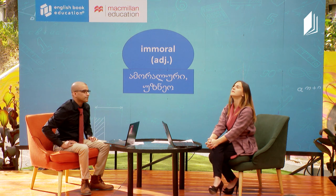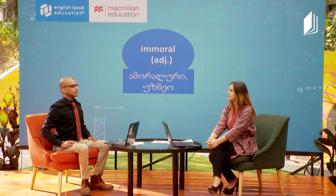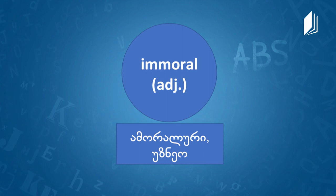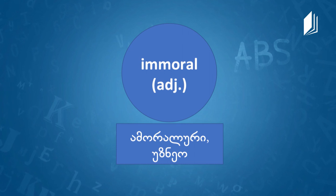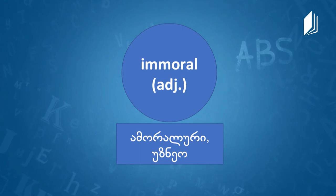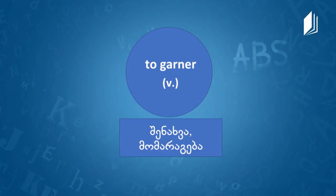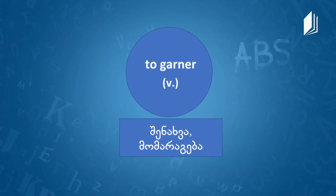Next, we have immoral — an adjective. This is when something is morally wrong; it should not be done, it goes against human nature. After that, we have a slightly unusual verb: to garner. To garner is to gather — in other words, to collect or obtain a large amount of something useful or important.